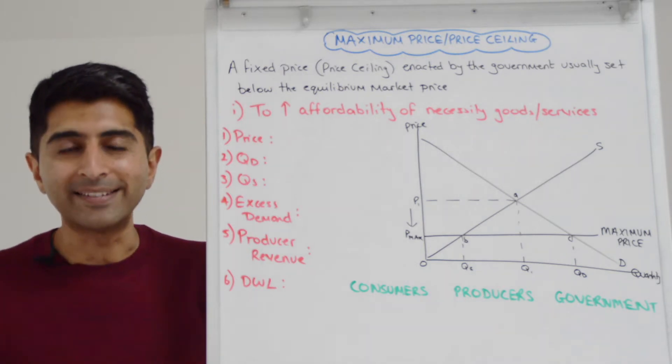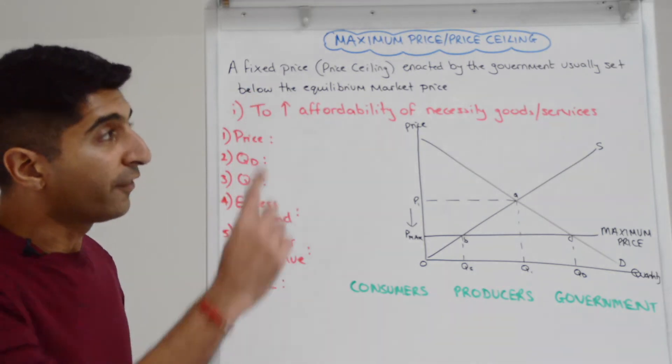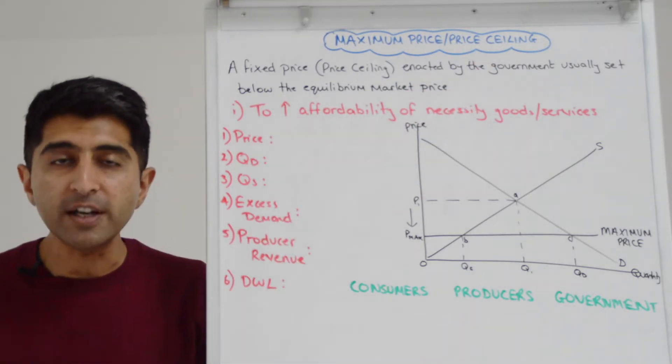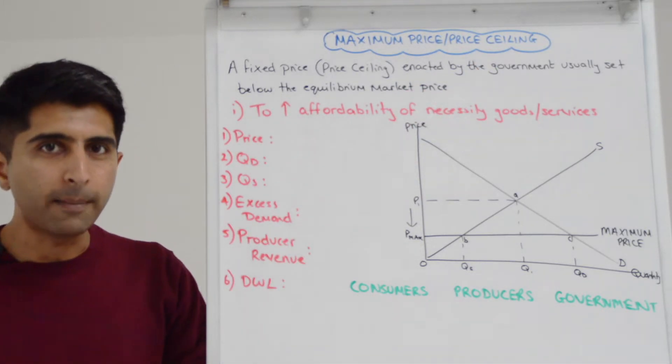Hi everybody, a maximum price is another price control. It's a fixed price or price ceiling enacted by the government and usually set below the equilibrium market price.